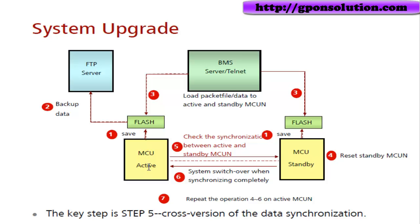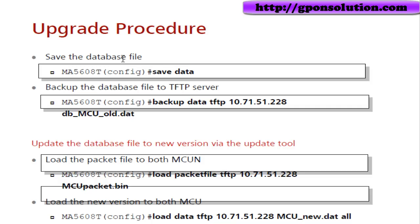The upgrade procedure details: save the database file and backup data via TFTP — this is the TFTP server IP and the data file name. Update the database file to the new version using the update tools. Then load the packet file to both MCU in-cards via TFTP, specifying the TFTP server, the OLT, and the packet file name. Also load data via TFTP.